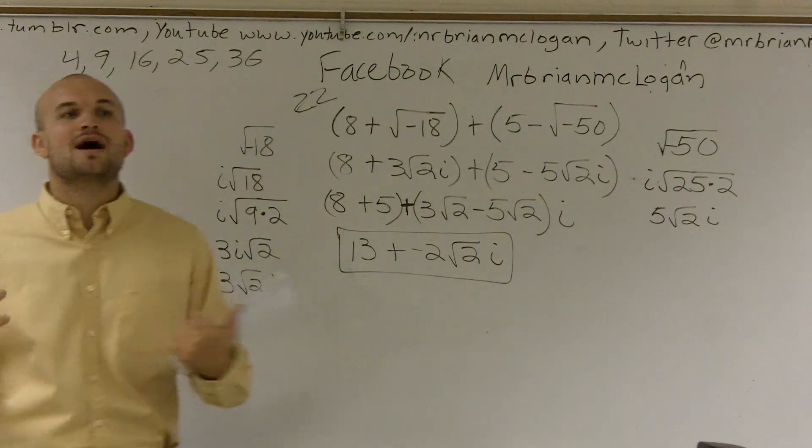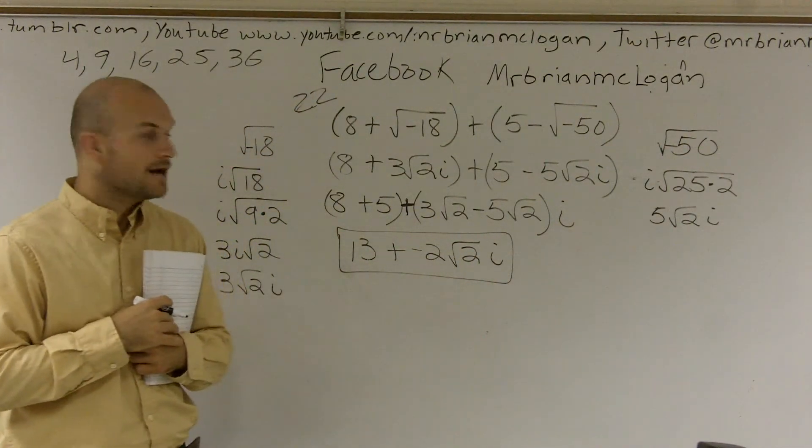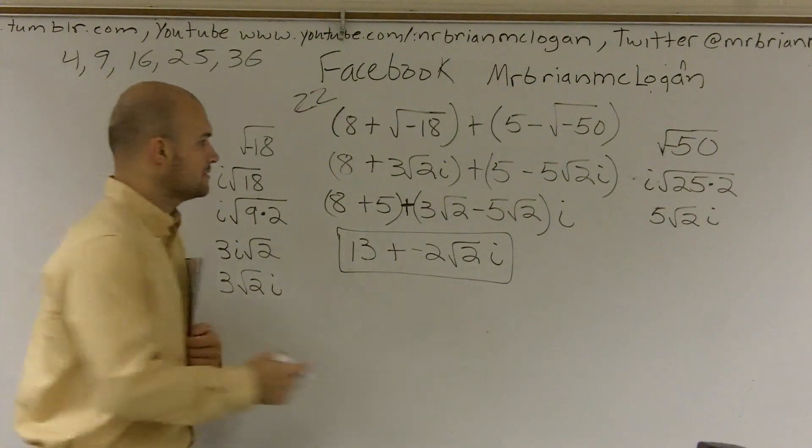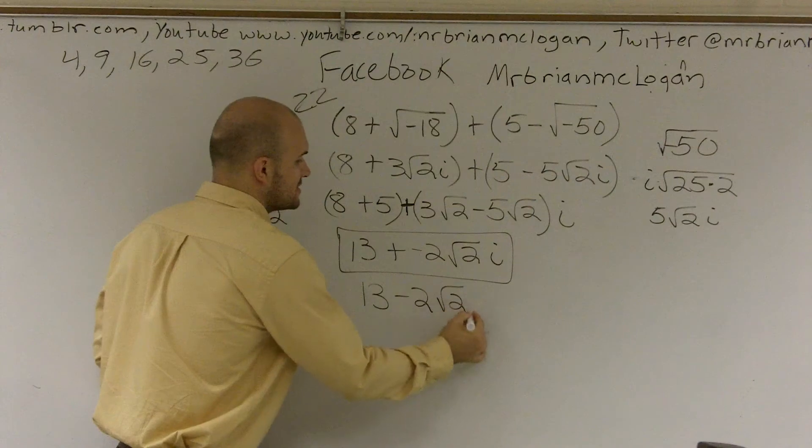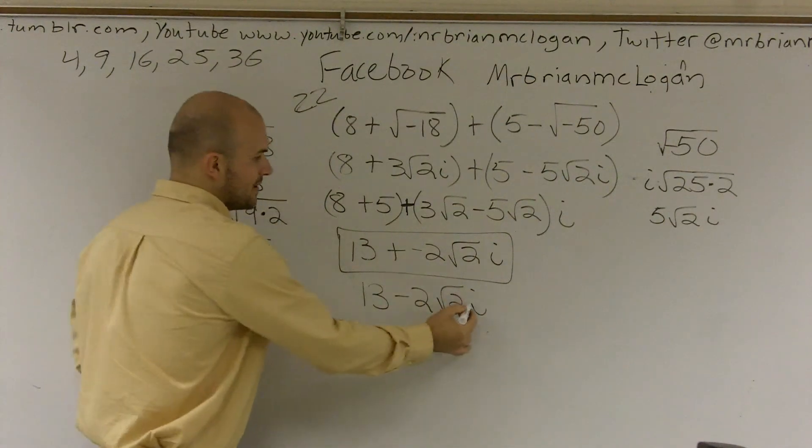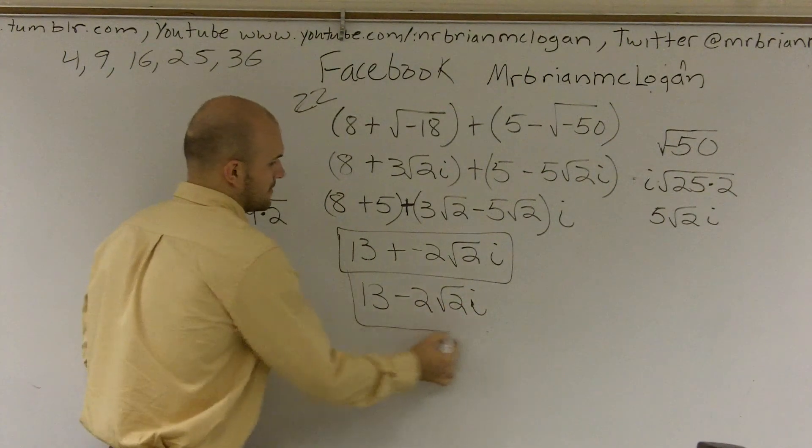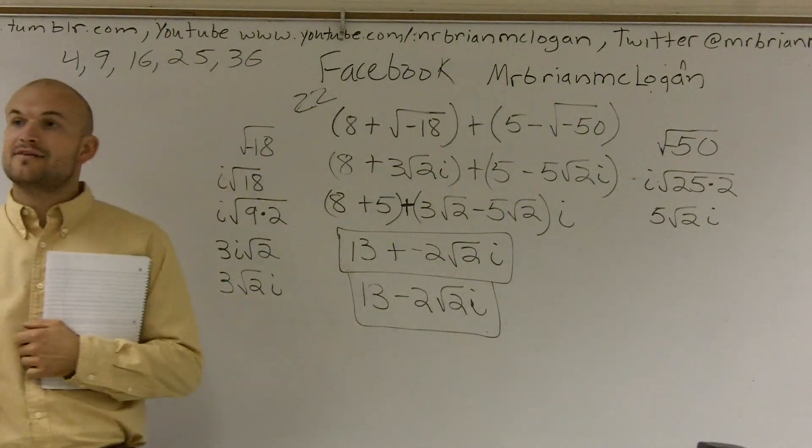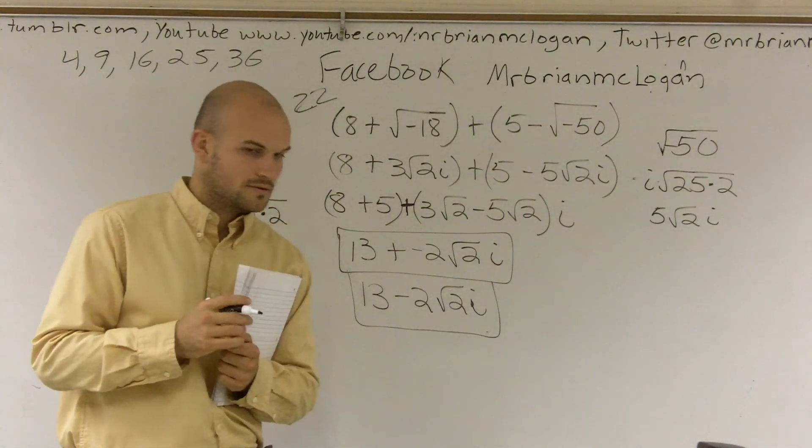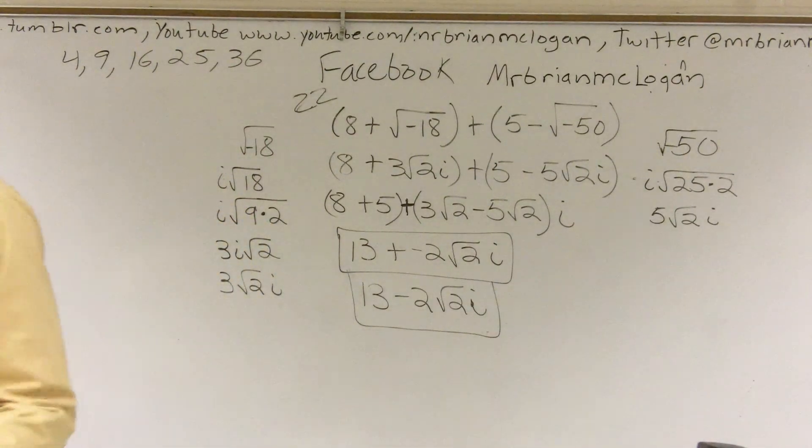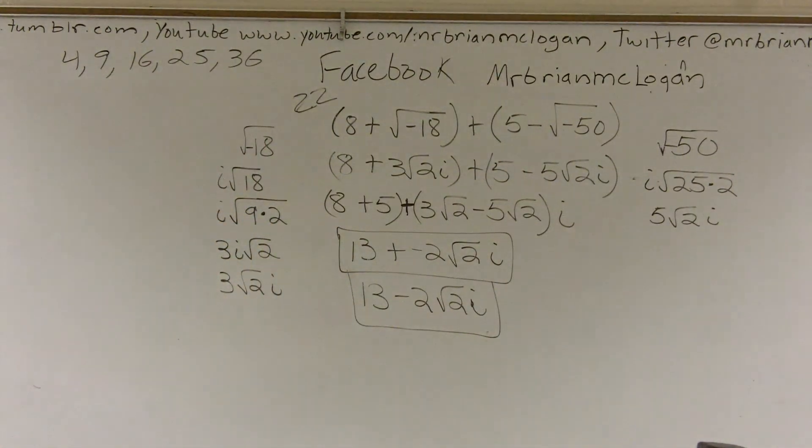Does anybody have any questions on the process, though? You have a plus negative. Yes, so therefore, 13 - 2√2i. Thank you. You can write that probably more formally. Does anybody have any questions, though, on the process on this? Can you do that again on the opposite side of the board so I can see? Yes. Okay.